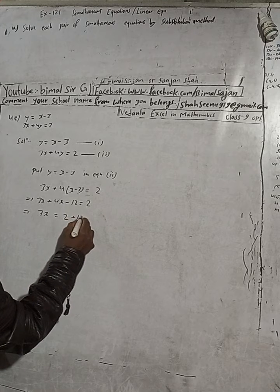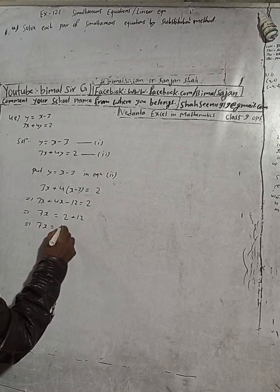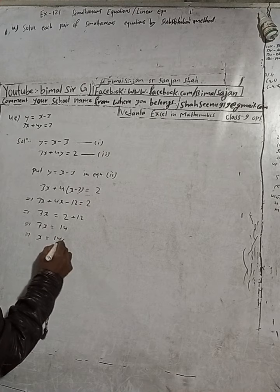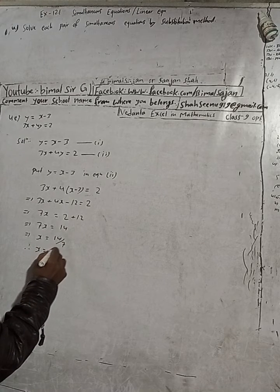So 7x is equal to 2 plus 12 is 14. Therefore x is equal to 14 divided by 7 is 2.